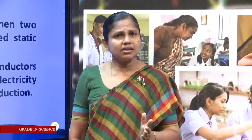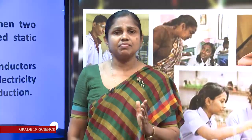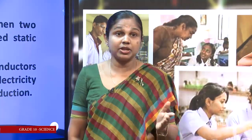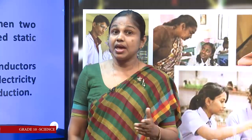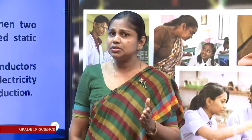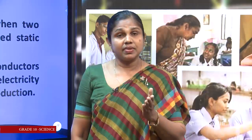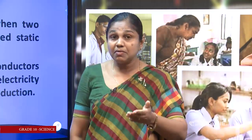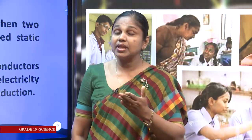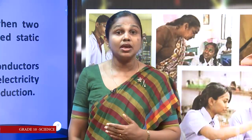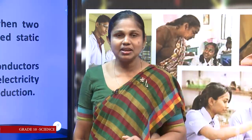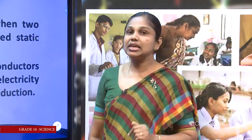Current electricity is the electricity generated in powerhouses like Victoria and Ramdenigala — there are hydro power stations in Sri Lanka. When this electricity is produced there, it is given to the national grid and through the national grid we receive that electricity for our consumption. Today we are going to learn about current electricity — the kind of electricity that can be conducted through conductors.